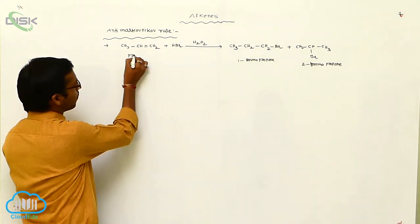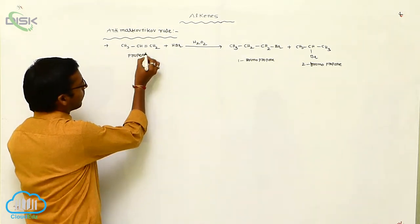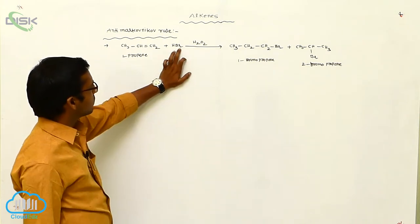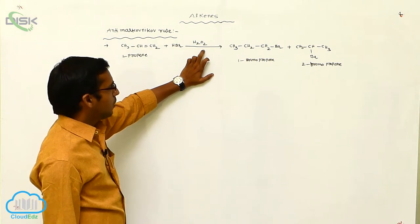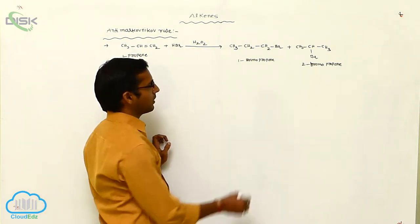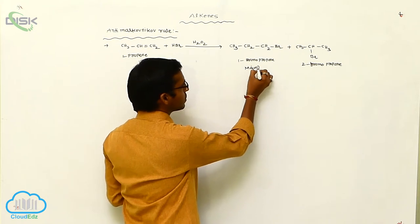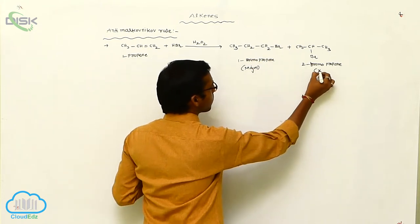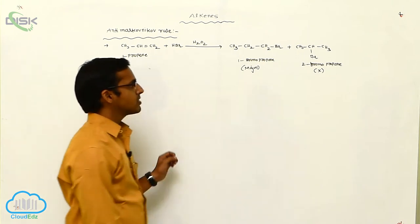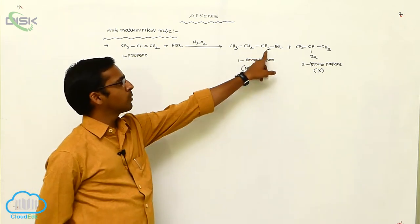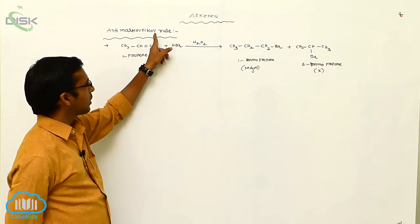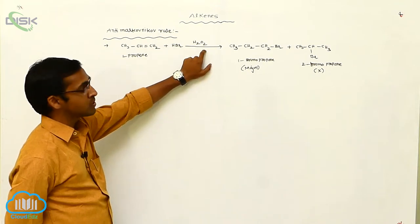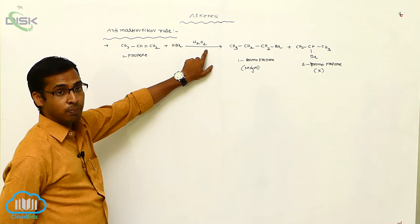This is 1-Propene. 1-Propene reacted with HBr in the influence of hydrogen peroxide gives 1-Bromopropane as the major product and 2-Bromopropane as the minor product. The negative charged particle attaching to the carbon with more number of hydrogen atoms is called the Anti-Markovnikov rule. This rule is applicable for unsymmetrical alkenes, especially in the presence of hydrogen peroxide or benzoyl peroxide.